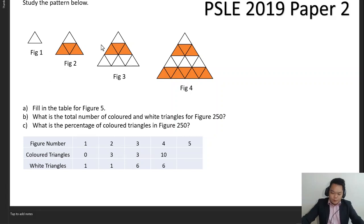Study the pattern below. In figure one you have one white triangle. In figure two you have one white triangle and three colored triangles. In figure three you have six white triangles in total—one, two, three, four, five, six—and three colored triangles in total.